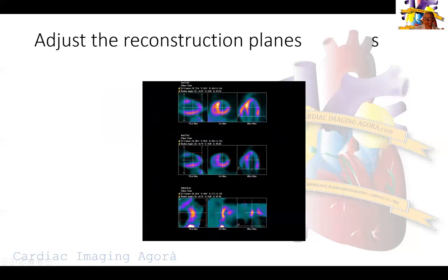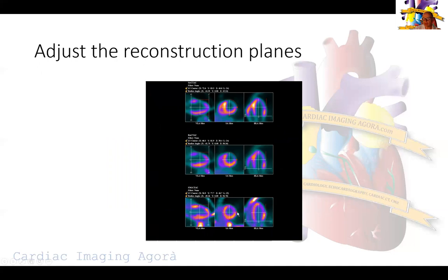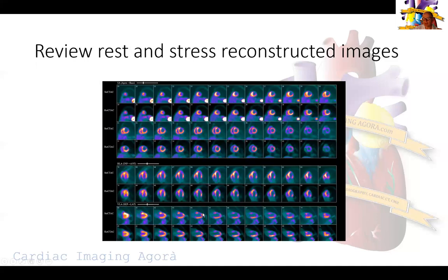Then we go to the construction planes. On the stress images on top, rest in the middle — the software picked up the ventricle boundaries quite well. In the FDG images, as often happens, the software went off over into the GI. The heart is actually up here, so we have to realign it by dragging it up. Now you can see: stress on top, rest in the middle, and FDG on the bottom.